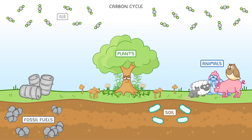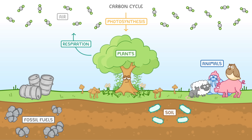Now that we know these different stores, let's look at how carbon moves between them. The most important process is photosynthesis, in which green plants and algae take in carbon dioxide from the atmosphere and convert it into biological molecules like glucose. This carbon, now locked up inside them, can then do two things: it can be passed back out to the atmosphere by respiration, or passed on to animals that eat the plants.